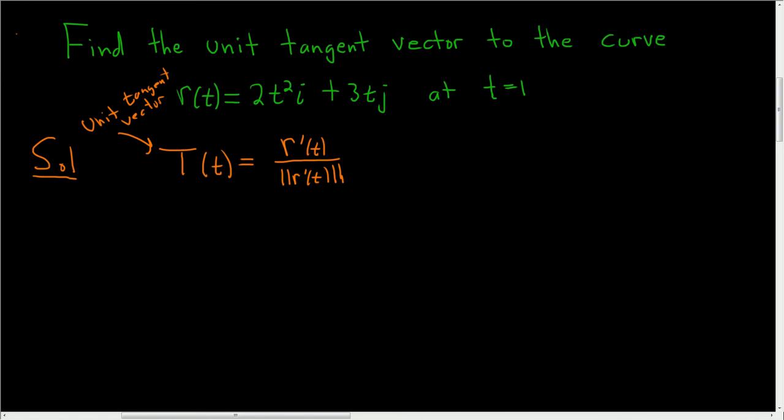Let's start by differentiating r. When we differentiate r, we just differentiate the components. So r'(t) equals 4ti plus 3j.